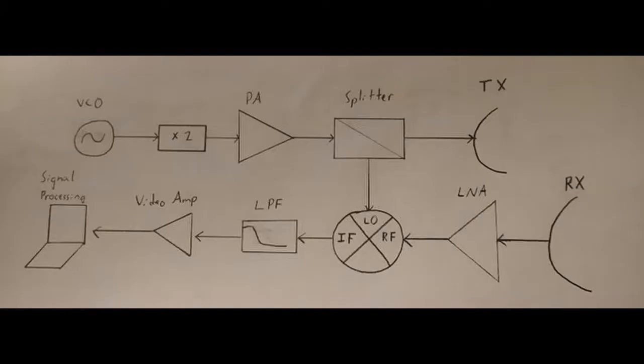Taking a look at the block diagram, we start with the voltage-controlled oscillator that generates a frequency signal, which is doubled using a frequency multiplier. And then that signal is sent through the power amplifier and into the splitter, which half of it gets sent into the transmit antenna, and the other half gets sent to the mixer.